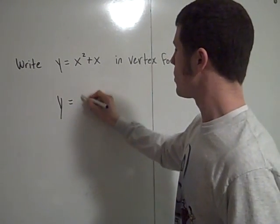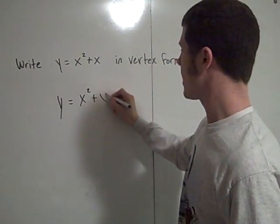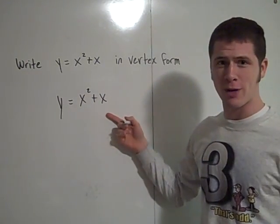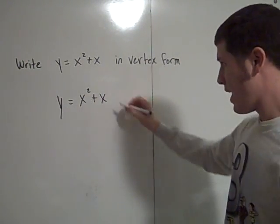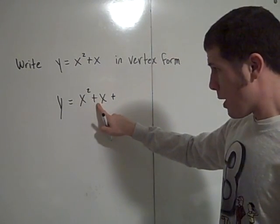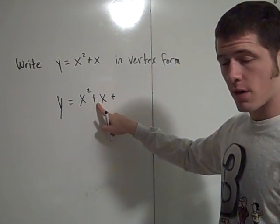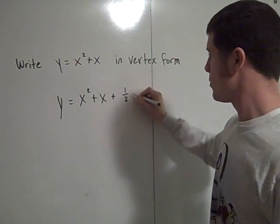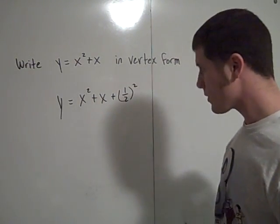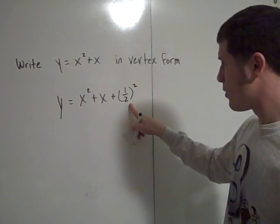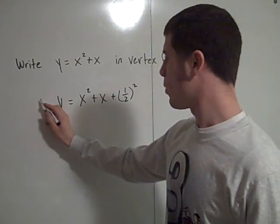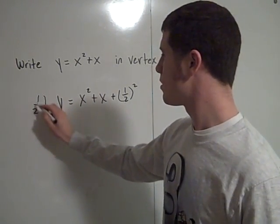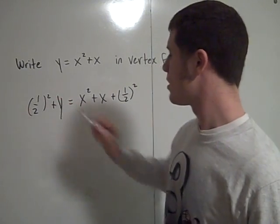So we have y equals x squared plus x, and I'm going to have to add something here to make this a perfect square trinomial. So I'm going to add b over 2 squared. My b value is 1, so I'm going to add 1 over 2 squared. But if I add 1 over 2 squared to this side, I have to add 1 over 2 squared to that side.